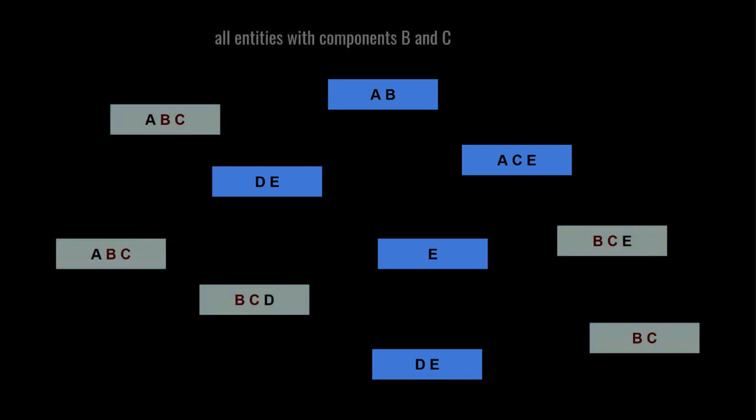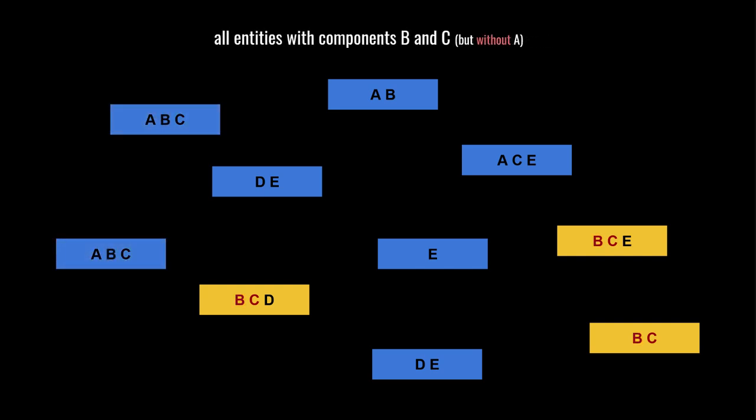Each box represents a chunk, and each letter denotes a component type of that chunk. The chunks themselves may be scattered throughout memory, but the entity IDs and components within the chunks are stored tightly packed. If we want to loop through all entities with both B and C components, we'd touch just those matching chunks. We might also access entities with a certain set of components but not access all of those components, or we might exclude one or more component types from our query.